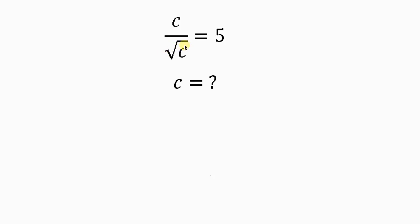So our first step will be to get rid of the denominator. That means to clear the fraction. And in order to do that, we multiply both sides by the square root of C.